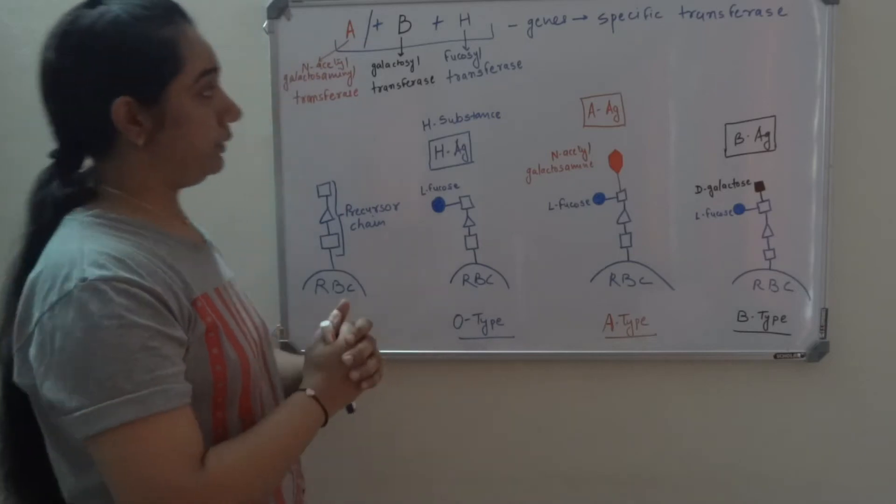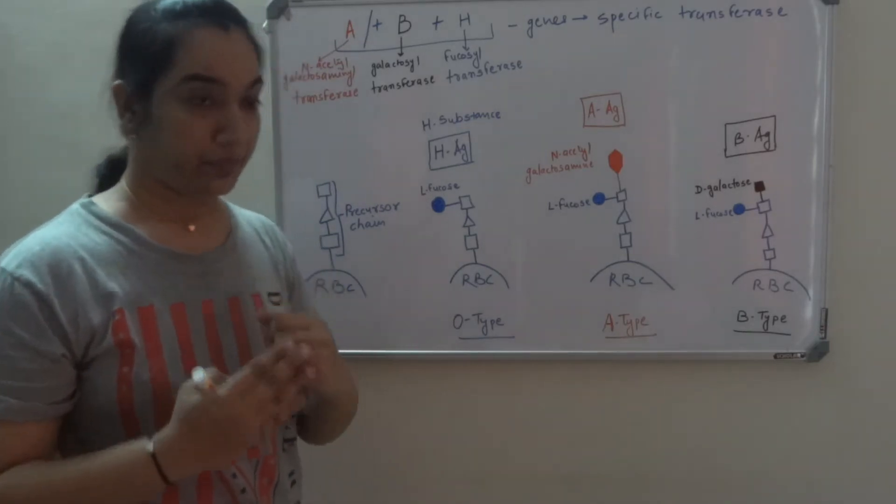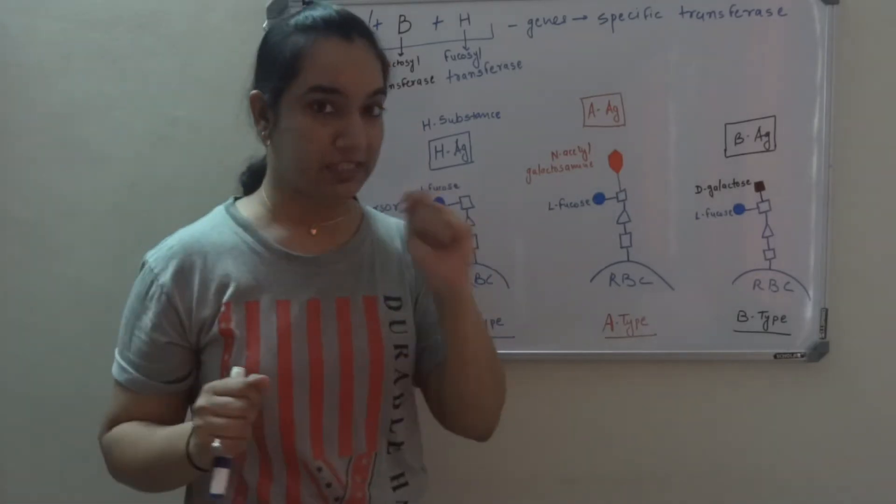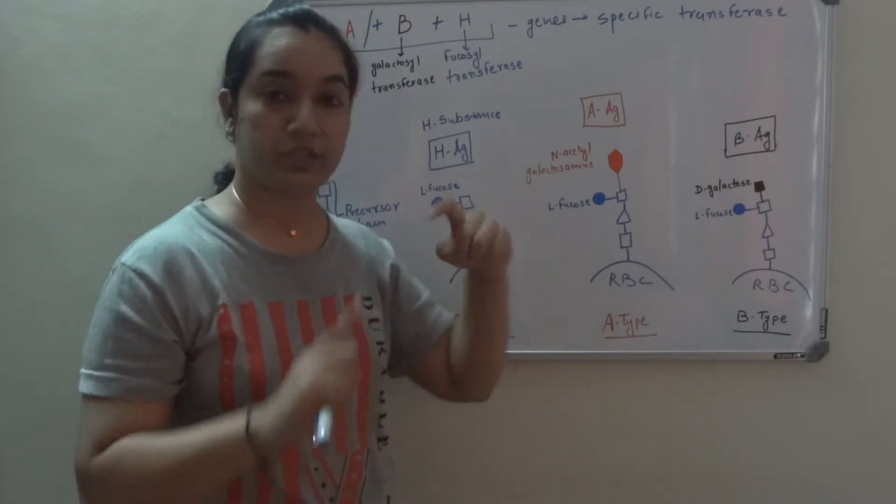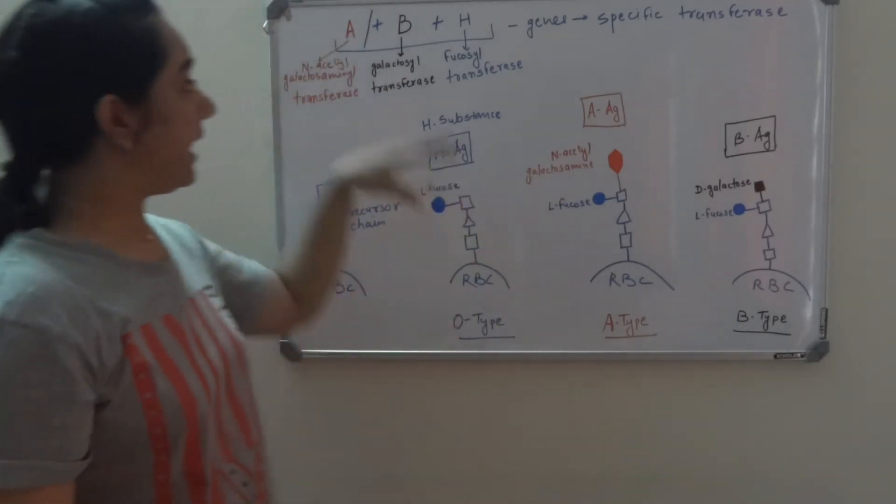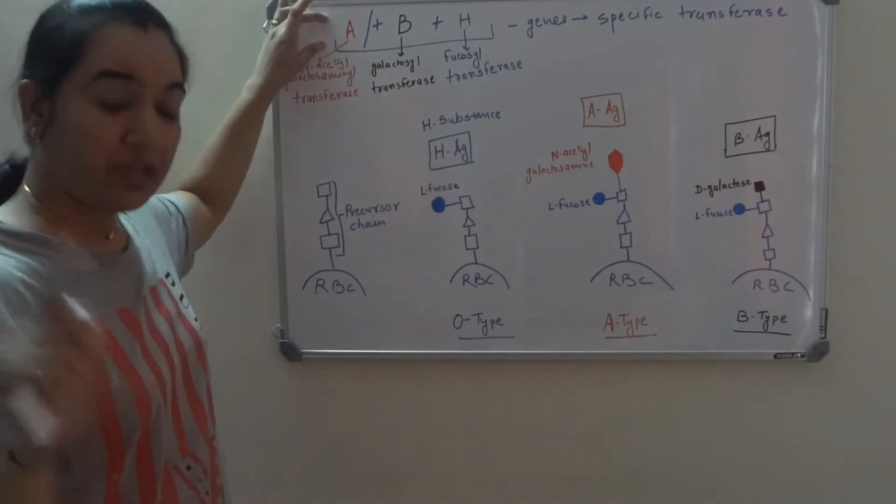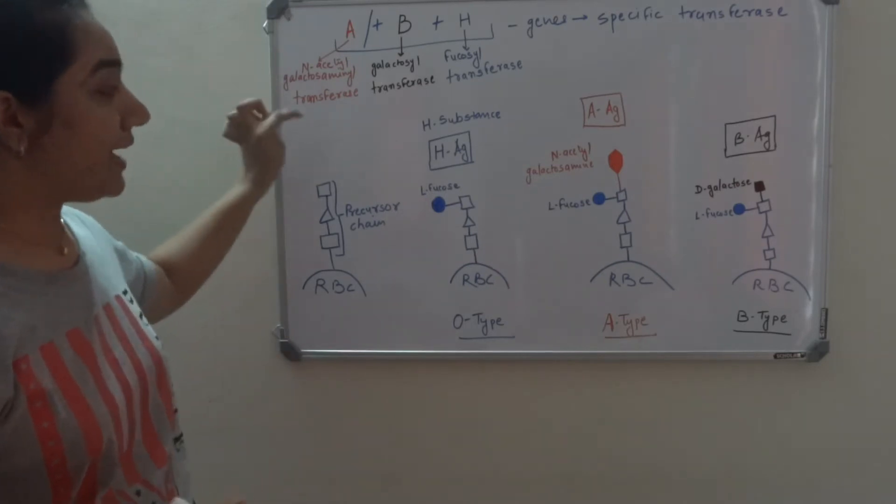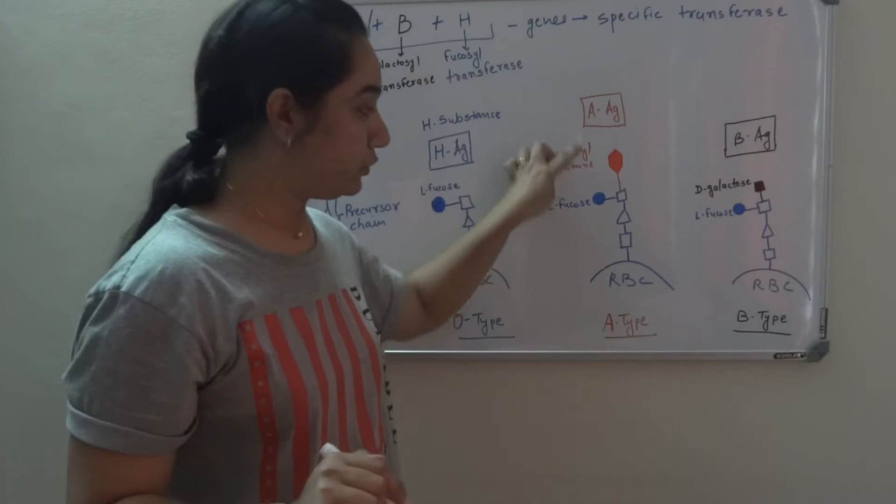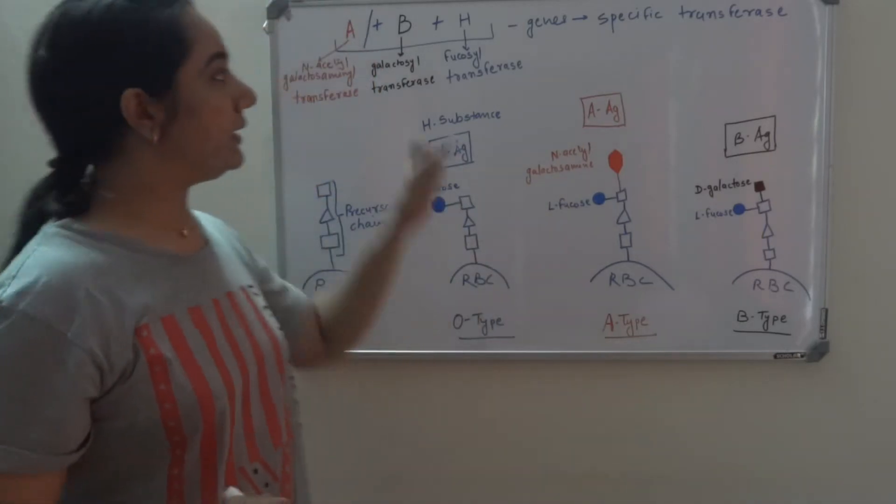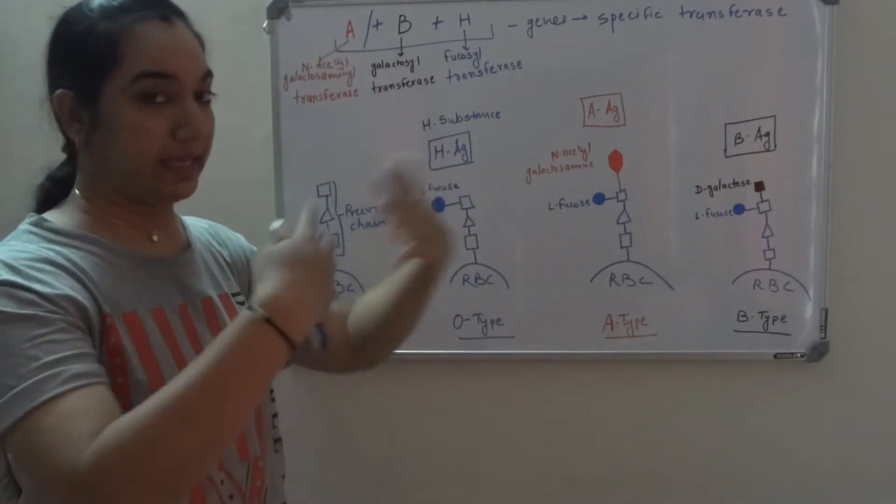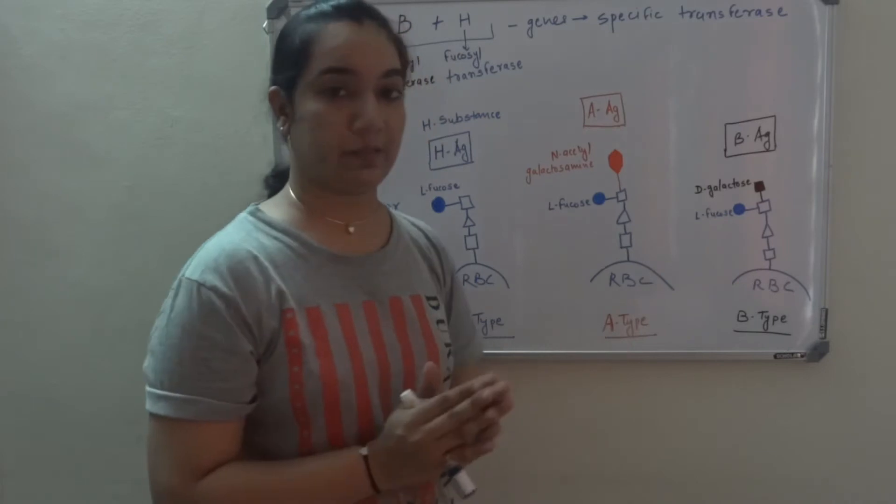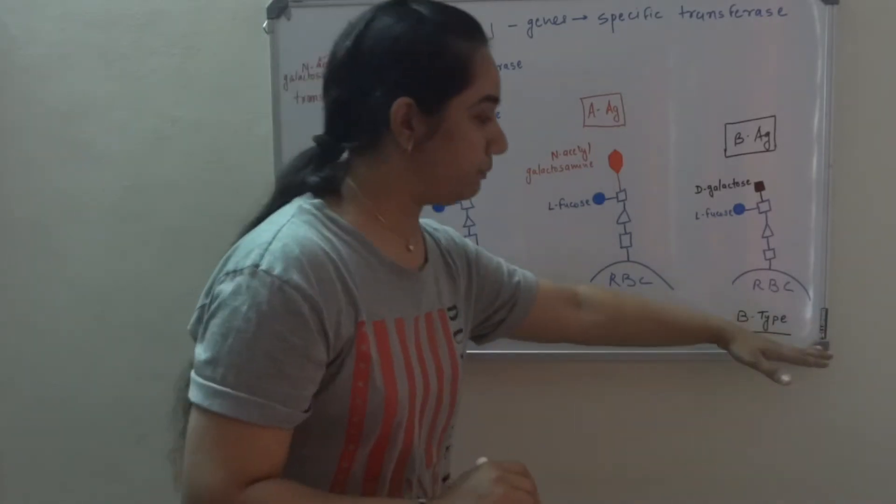For example, if the person contains gene A, they will have specific transferase enzyme, because people who are classified A will have N-acetyl-galactosamine attached to H substance. That means they have specific gene which codes for N-acetyl-galactosamine transferase that transfers N-acetyl-galactosamine to the H substance. If an individual contains gene B which is galactosyl transferase, that will transfer D-galactose to H substance and they will be classified as blood group B.